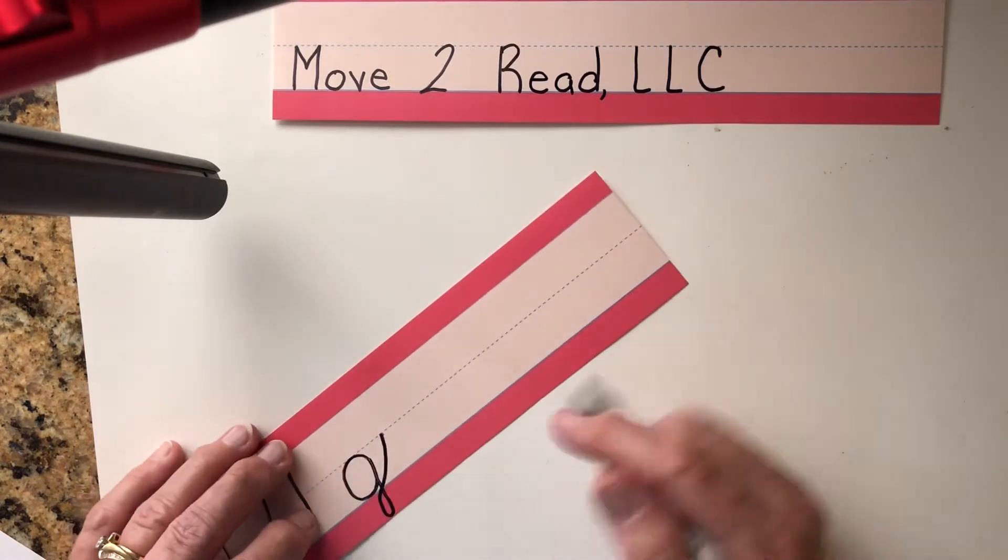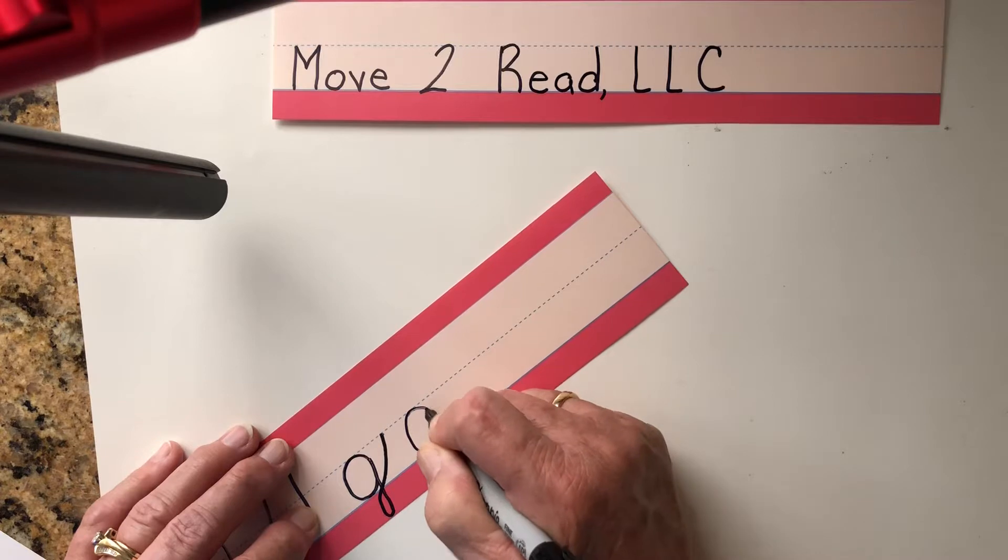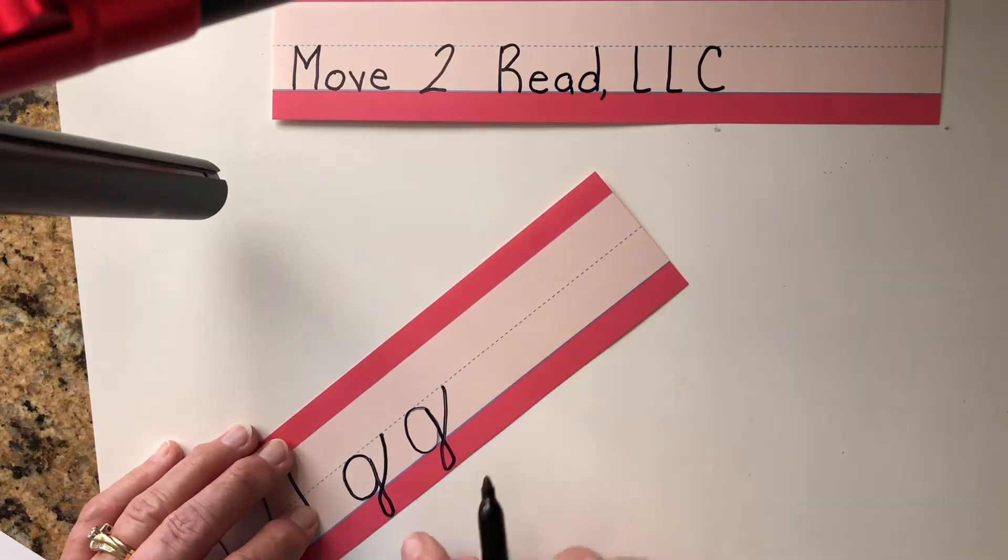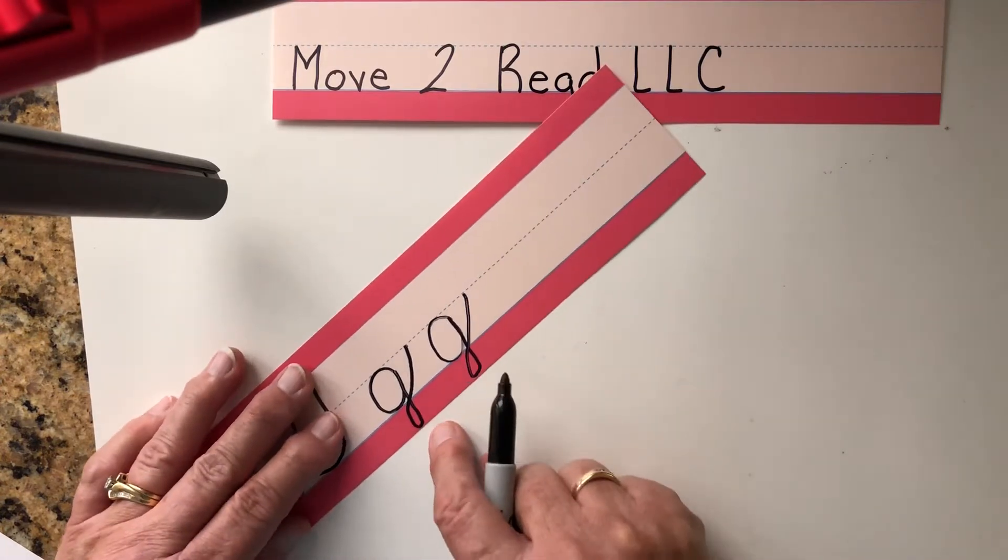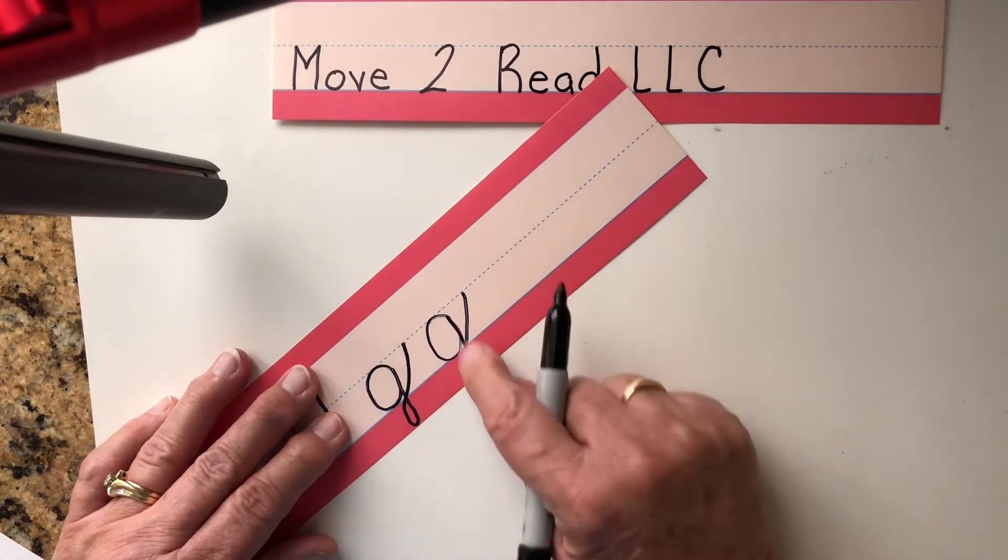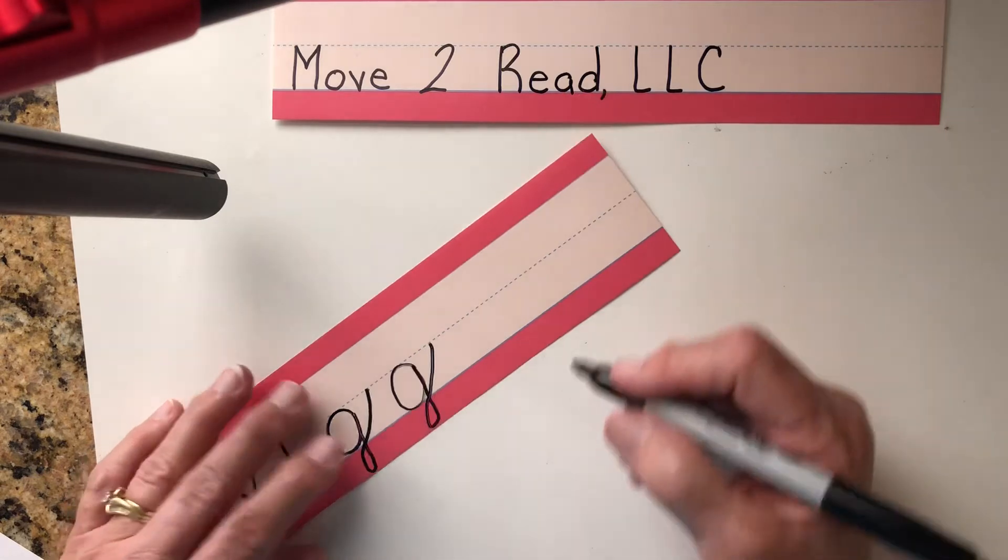So let's do that one again. Starting at 2 o'clock, swinging around, making our loop, putting on our connector. I really wish my sentence strip was longer so that I could make sure it went down farther. On your regular paper, you'll be able to do that.